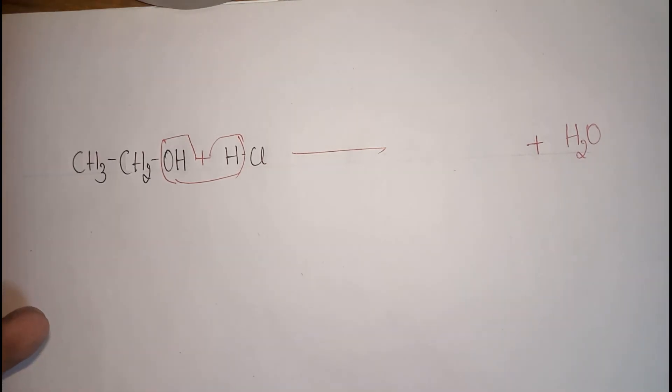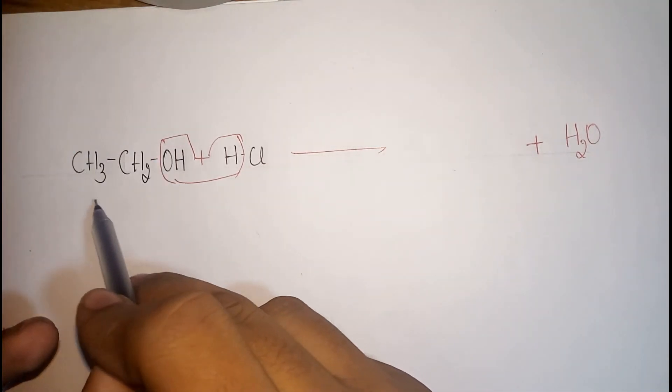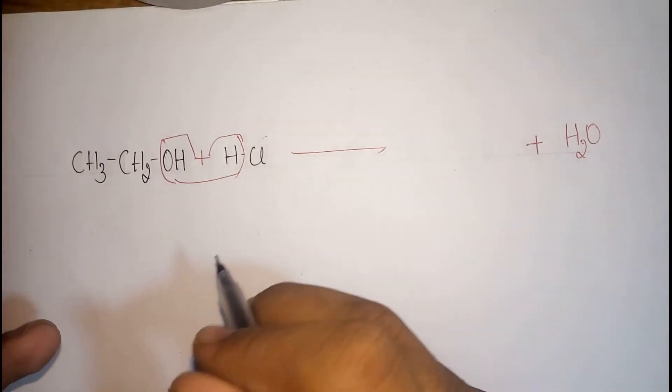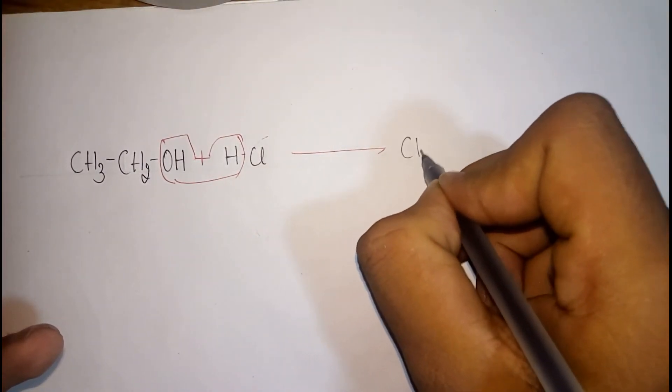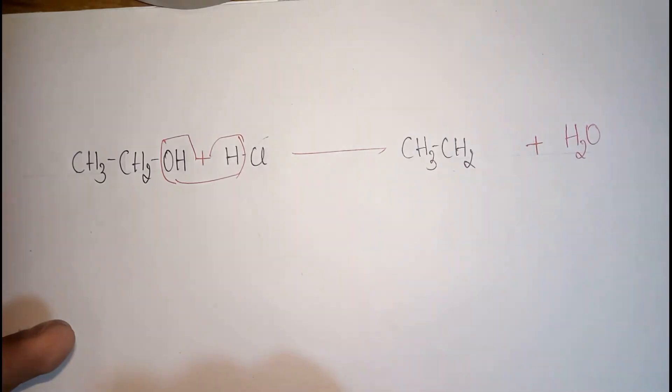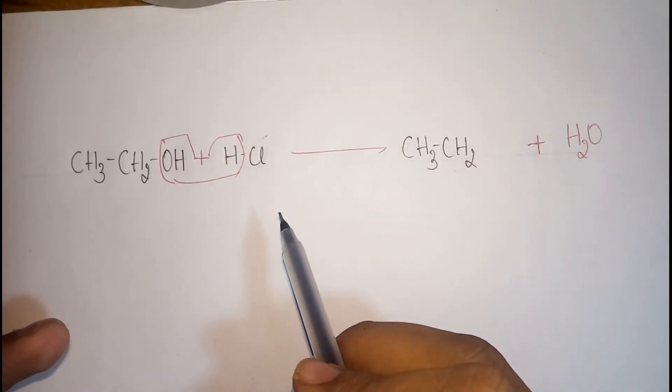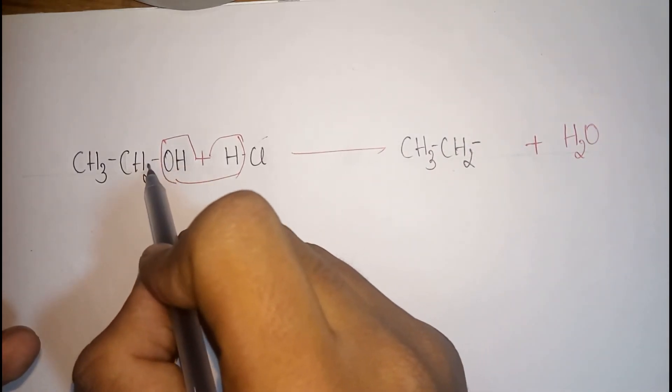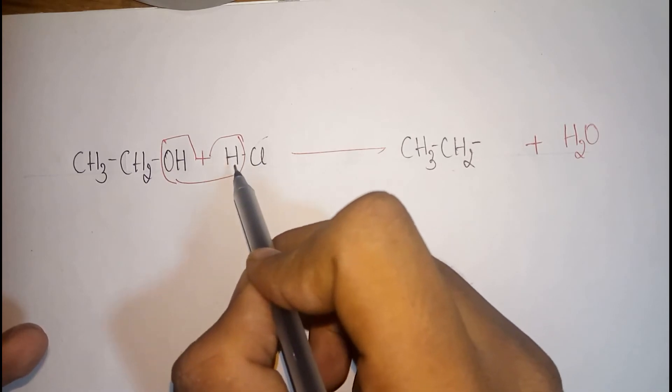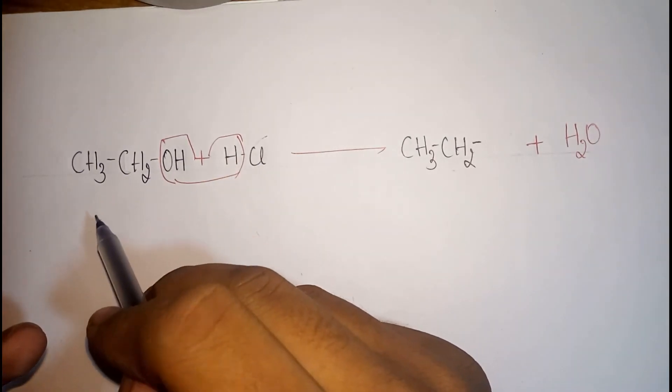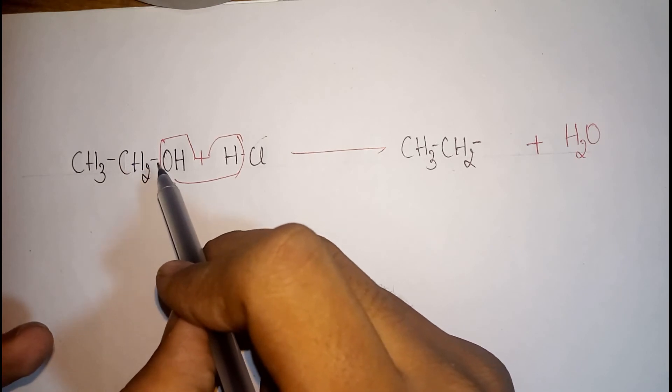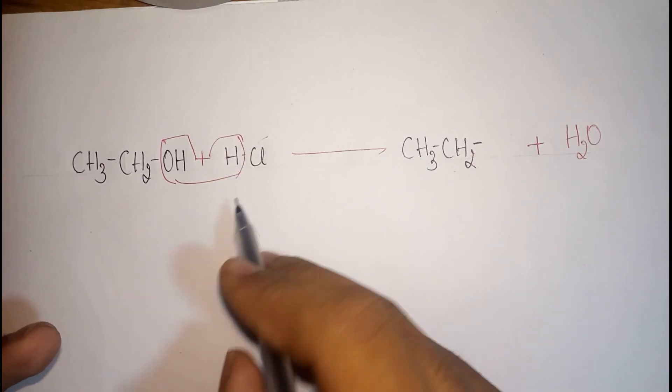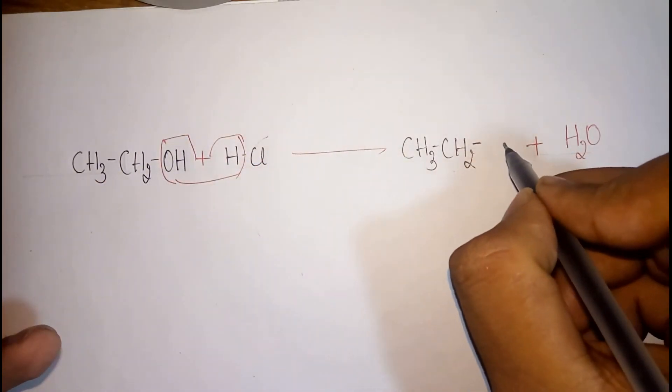The remaining elements in the reactant's side will be CH3CH2 from the first molecule and Cl from the second molecule. Now you have to combine the remaining molecules from the reactant's side to form the suitable product. But remember that while combining you should combine in such a way that the bond where it has broken should be satisfied. In this case the bond between CH2OH is broken and in the second molecule H and Cl is broken. So here Cl should come and attach with CH2.